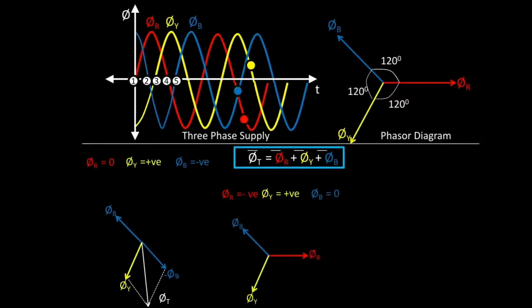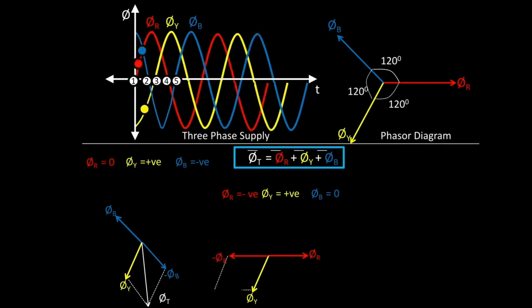Drawing the original phasors, since φB is 0 we remove it. φR is negative, so we extend it in the opposite direction to get −φR. Then we draw the parallelogram and join the point of intersection from the origin, giving us the phasor for total flux φT. So we have done it for instant 5.